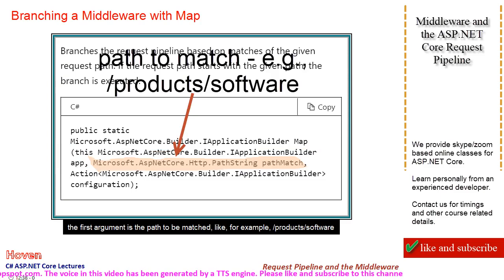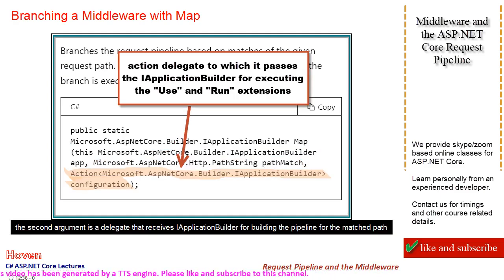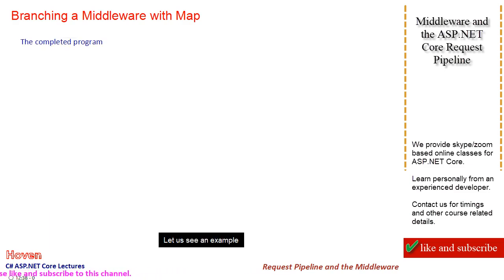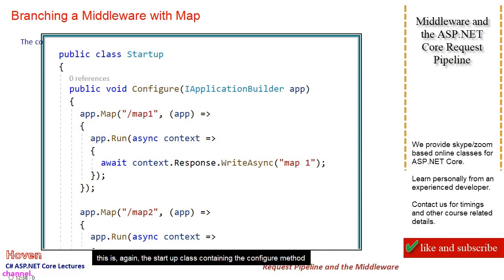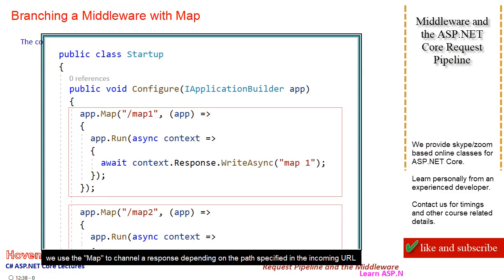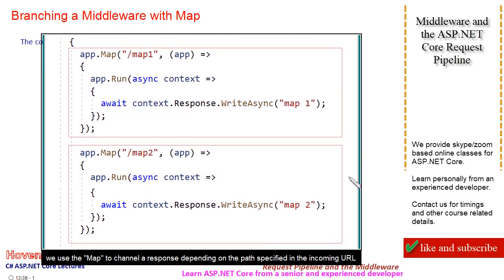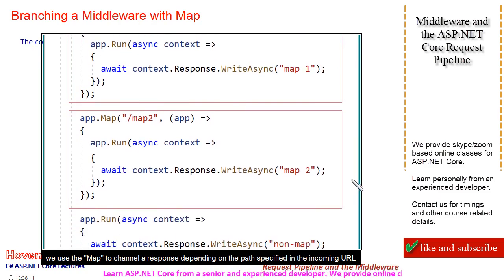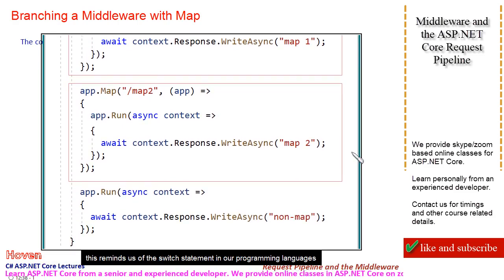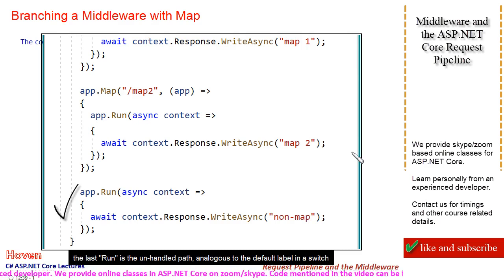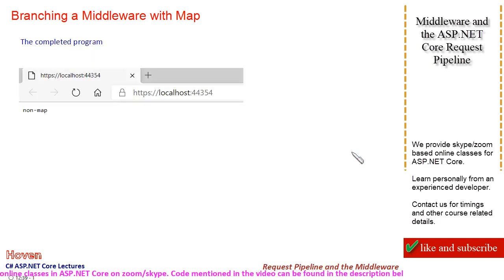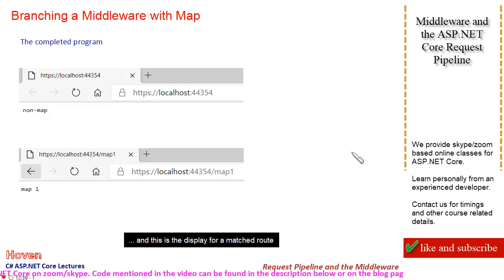The Map method is used for path-based branching — for example, slash product. The second argument is a delegate that receives IApplicationBuilder for building the pipeline for the matched path. We use Map to channel a response depending on the path specified in the incoming URL. This reminds us of the switch statement in our programming languages. The last Run is the unhandled path, analogous to the default label in a switch. This is the display for an unmatched route, and this is the display for a matched route.